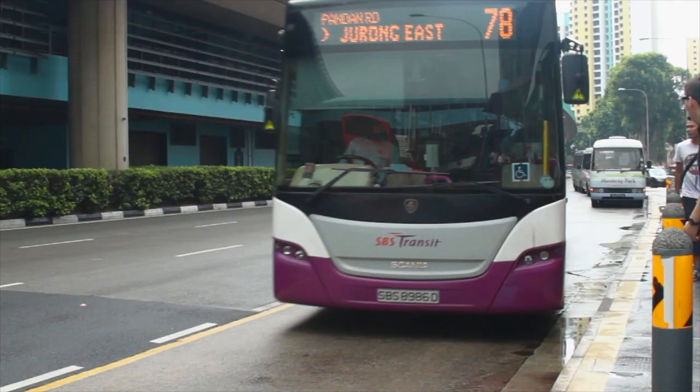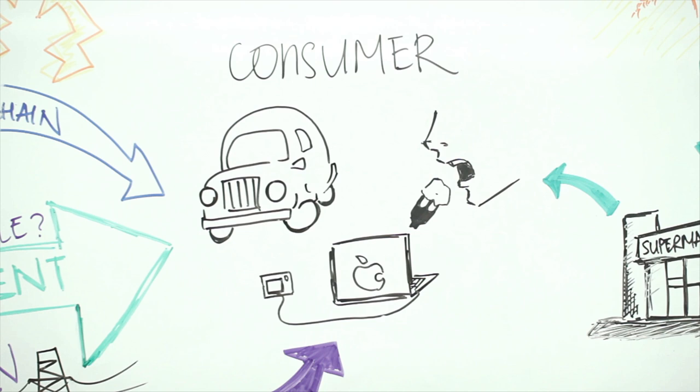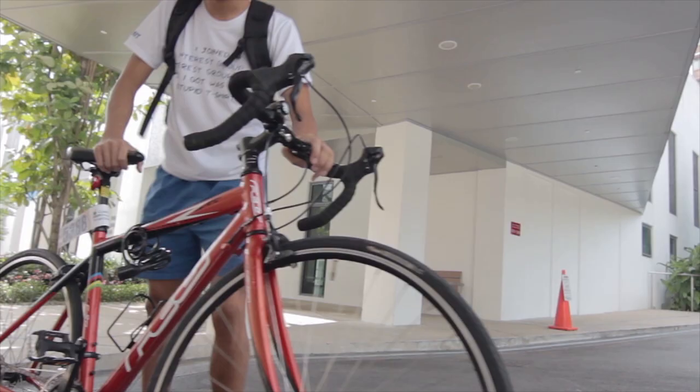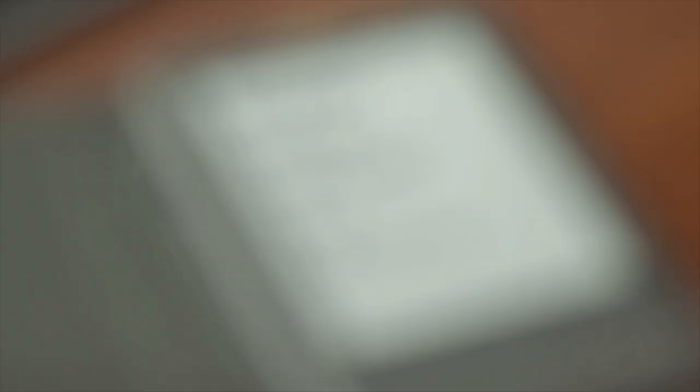But before we think about making changes to our infrastructure, changes in our lifestyle can reduce energy consumption today. Simple things like riding a bike, choosing low-power electronic devices. Be creative in the way you reduce your energy footprint, and you'll find that even the simplest idea can make a difference.